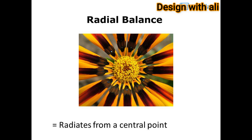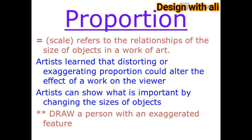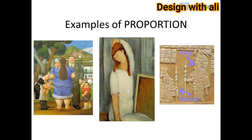Radial balance radiates from a central point. Proportion — or scale — refers to the relationships of the size of objects in a work of art. Artists can distort or exaggerate proportion to alter the effect on the viewer and show what is important by changing the sizes of objects.